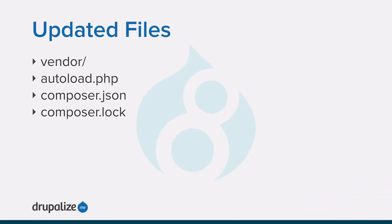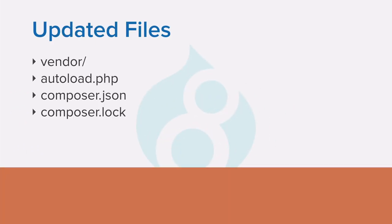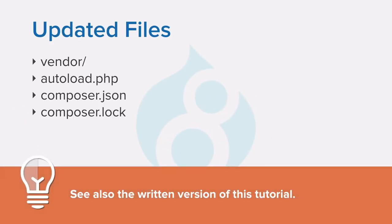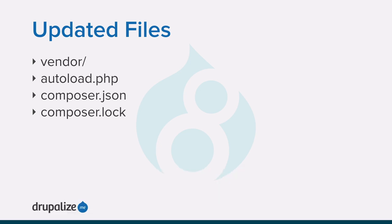If you're unable to install the Git or Composer tools on your live server, after following the steps in any of the sections below on your local server, you'll need to transfer any updated or added files to the live server. The recommended procedure is to make an archive or zip file of the new and changed files, and then transfer that archive to your live server and extract it there.